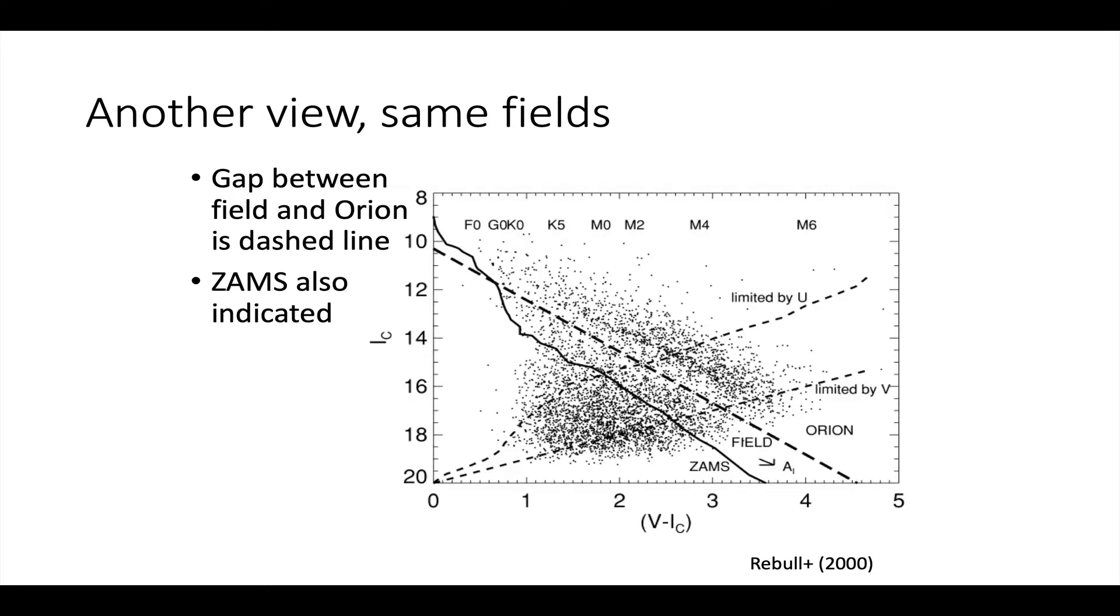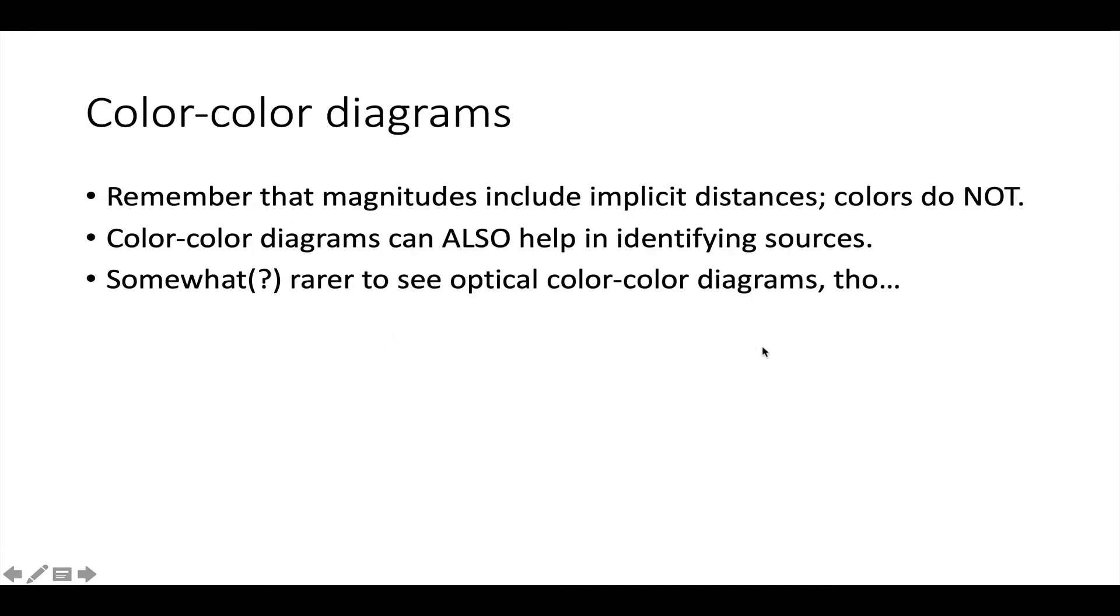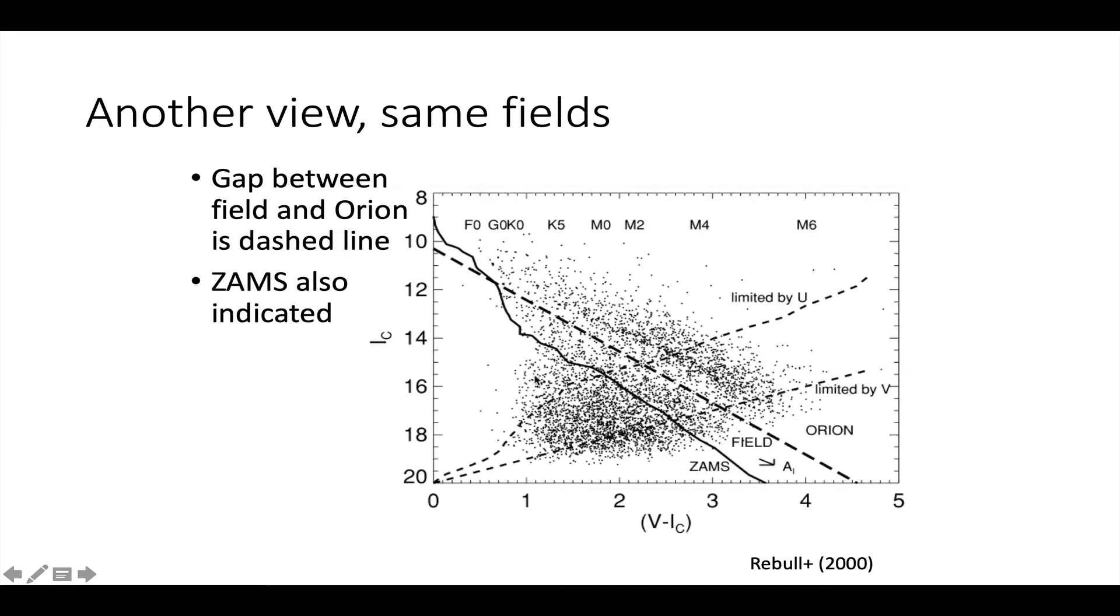This is another view, the same fields, again I versus V minus I, but now we've got some different annotations. This solid line here is the zero age main sequence. In other words, where they alight when they ignite hydrogen at the distance of Orion. Here's that clump of things that we're taking to be Orion. The dash line is the gap between the Orion clump and the field. You can see Orion and field.